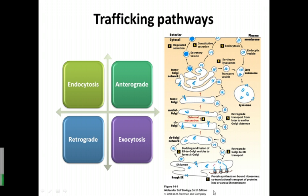If we see this diagram, you can see that from your endoplasmic reticulum (ER), you have a Golgi, a Trans-Golgi, and you have the secretory vesicle. For secretion, we have two types: constitutive secretion, which is always on — for example, the formation of amylase in your saliva — and regulated secretion, which is secreted when it is needed.